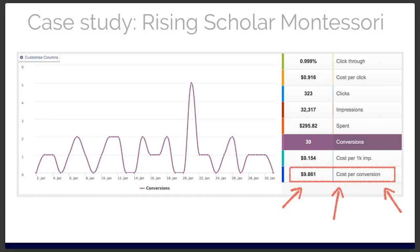With this campaign we were generating a cost per conversion — a cost per tour request — of $9.86. That is a very, very good result, and that's on average. What we do is run many different ads — up to 50 different ads at a time — each with a different headline, different video, different copywriting, different call to action. We're testing different value propositions to see which ones get more engagement, and the average came out to $9.86 per inquiry.